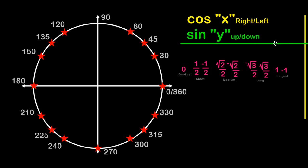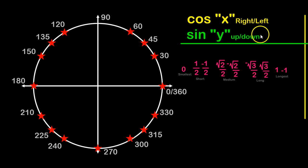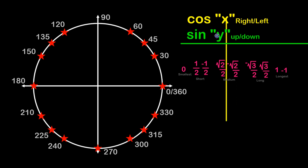We basically have values between 0 and 1, or 0 and negative 1, that are going to represent our cosine and sine values. 0 is the smallest value, 1/2 is the next smallest — which I've referred to as the short — and that's plus or minus 1/2. The medium value would be root 2 over 2, plus or minus. Long is root 3 over 2, and the longest is 1. Cosine is your x value, which is your right and left. I'm going to use this line here to represent cosine values.